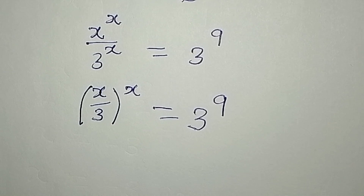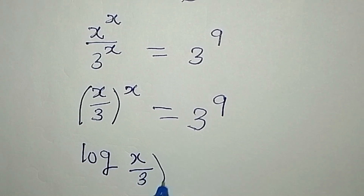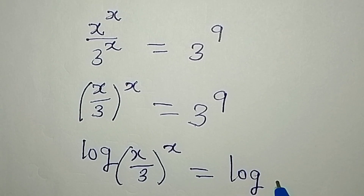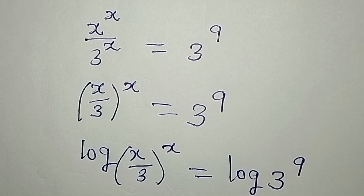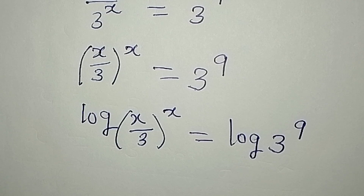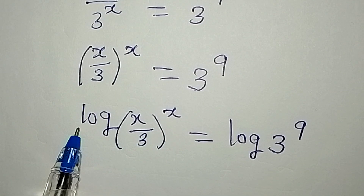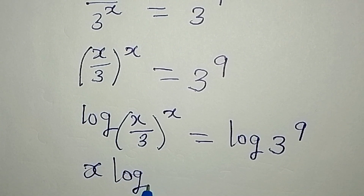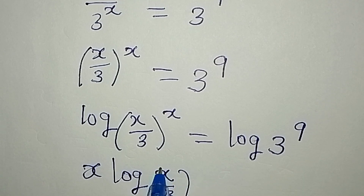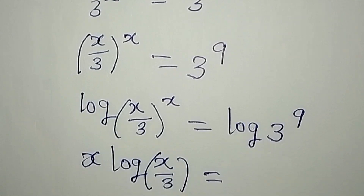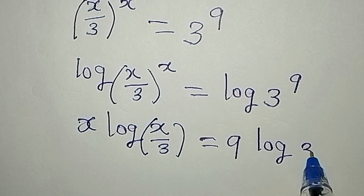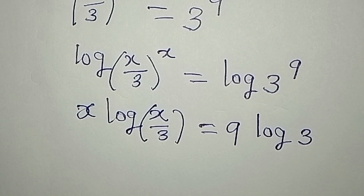What I'm going to do is take the log of both sides, so we have log of (x over 3) to the power of x equals log of 3 to the power of 9. The power always multiplies the log, so we have x multiplied by log(x/3) equal to 9 multiplied by log 3.